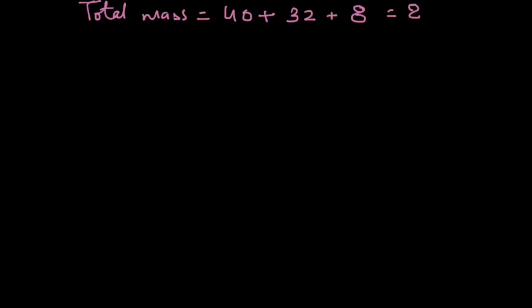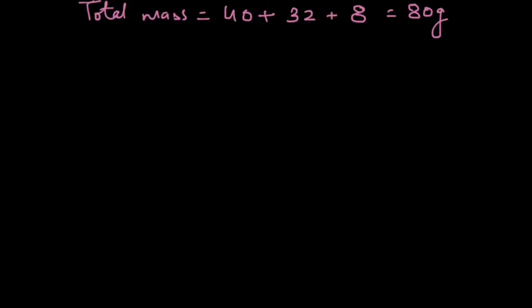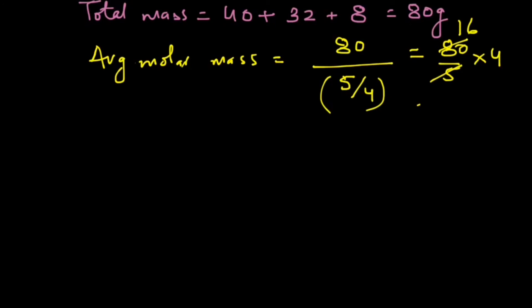And the total number of moles is 5 by 4. So the average molar mass of this mixture will be equal to total mass, that is 80 grams, divided by the total moles, that is 5 upon 4, and it should give you 80 upon 5 into 4, and if we cancel out the terms we get 64 grams.